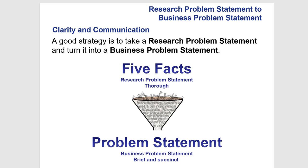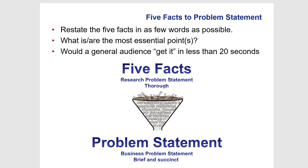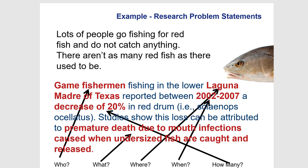You have to have some supporting content to support your problem, and we're going to talk about five journal critiques that get us there — that's one of the assignments coming up. You have to have factual support for your problem statements. The curriculum has a comparison slide showing a bad problem statement versus a good one. The bad example says: 'Lots of people go fishing for redfish and do not catch anything. There aren't as many redfish as there used to be.' That's not a very good problem statement.